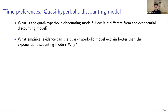After that, we discussed the quasi-hyperbolic discounting model, a relatively small modification of the exponential discounting model. You should know what this model is, how it differs from exponential discounting, and in particular the beta parameter measuring present bias — how much weight you put on the present versus everything in the future. You should understand what empirical evidence the quasi-hyperbolic model explains better, such as preference reversals and demand for commitment.